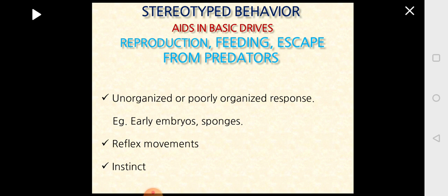What is stereotype behavior? It is the behavior that helps the animal attend to its basic needs — to find food, escape from enemies, or reproduce. You can see highly coordinated, organized responses or very unorganized poor responses, depending upon the complexity of the nervous system. Invertebrates like sponges exhibit poor or unorganized responses, whereas vertebrates with well-developed brains show highly coordinated responses to stimuli.